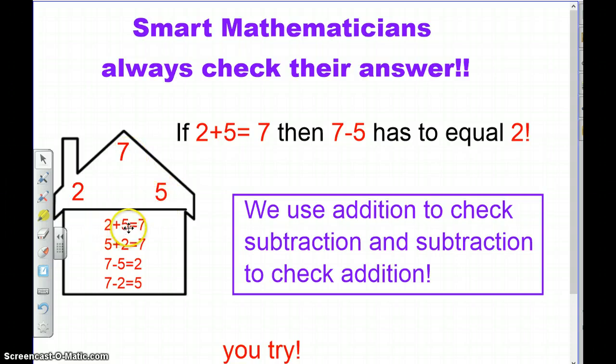If 2 plus 5 equals 7, then 7 minus 5 has to equal 2. So you can use that relationship, that inverse relationship, to check your answers.